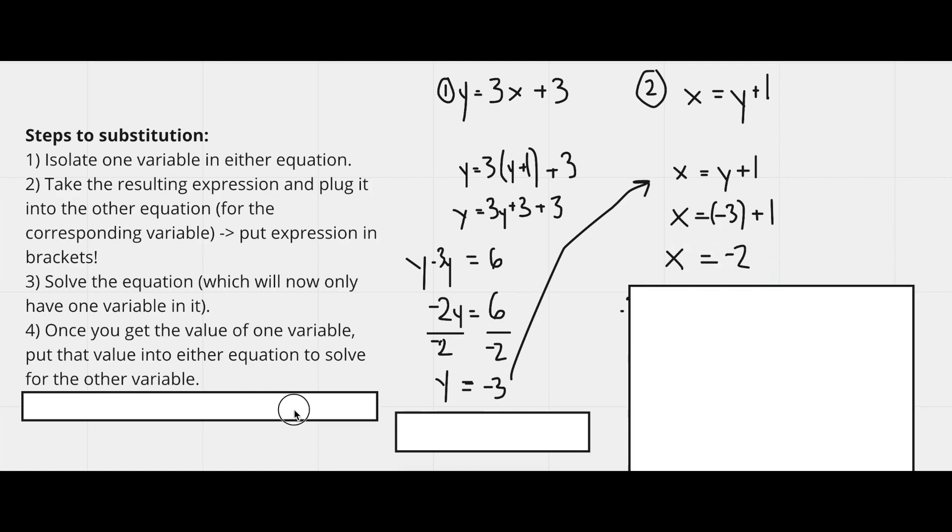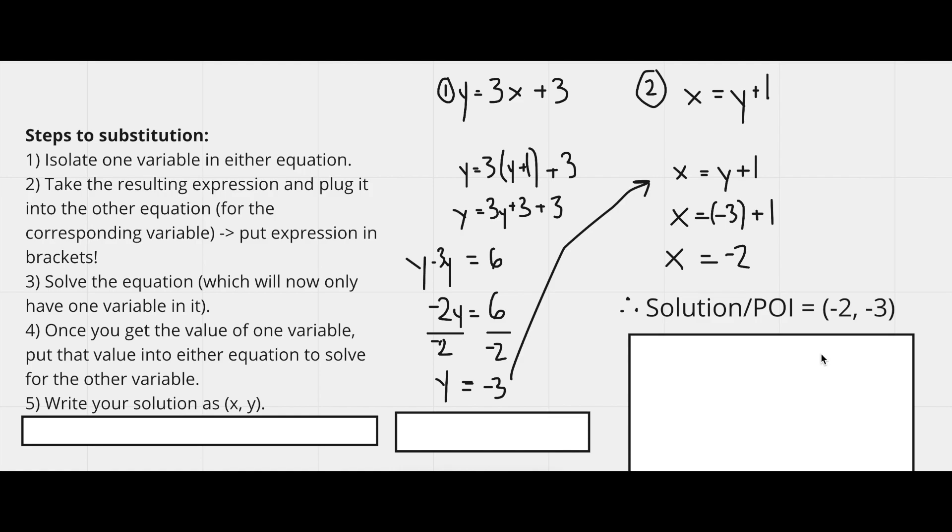And our final step is to write our solution as a coordinate, as we write points on a grid, x comma y. Therefore, our solution or our point of intersection is negative 2 comma negative 3,